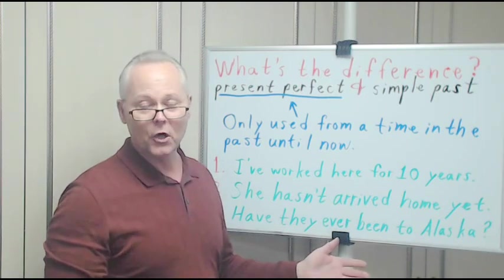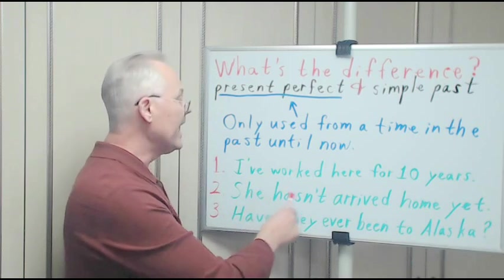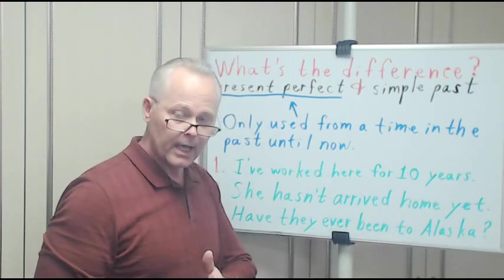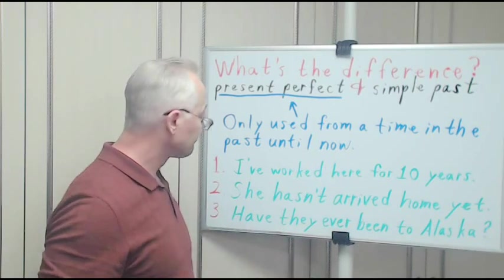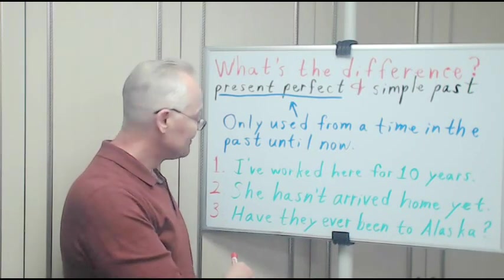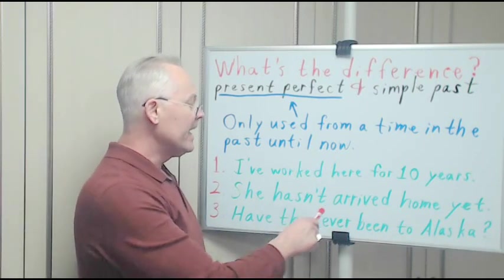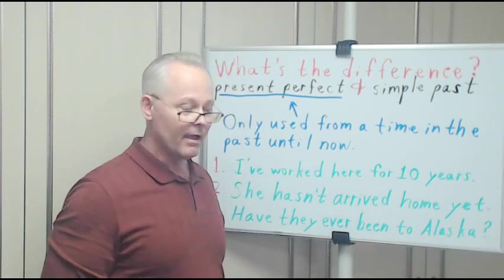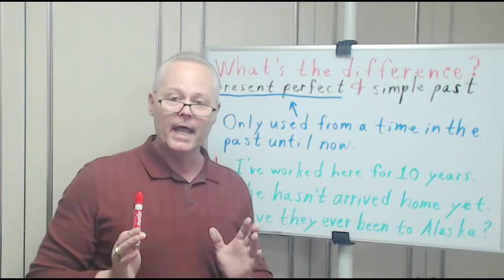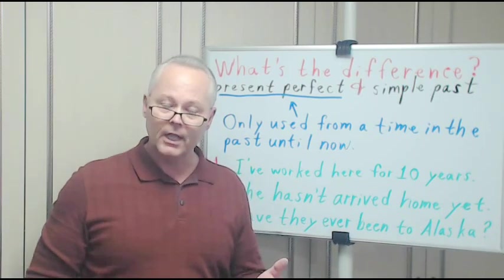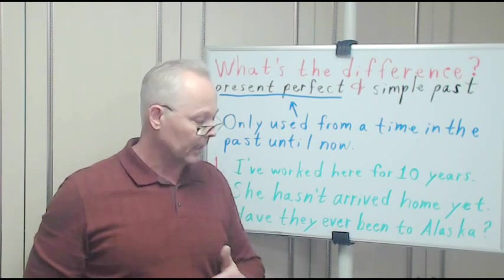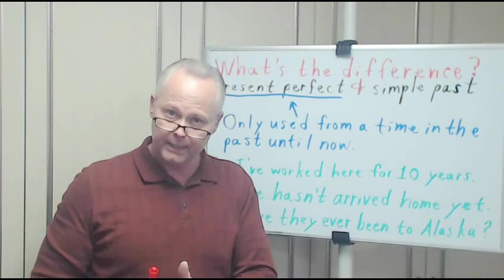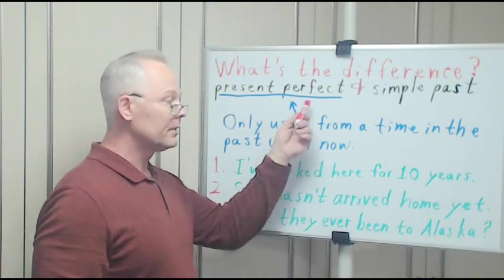We're talking about the past. We expect her to arrive home soon. Maybe we think she should have already been home, but she hasn't arrived home yet, up to now, at this time. She's not here. Number three: Have they ever been to Alaska? Have they ever been to Alaska at any time in their lives?